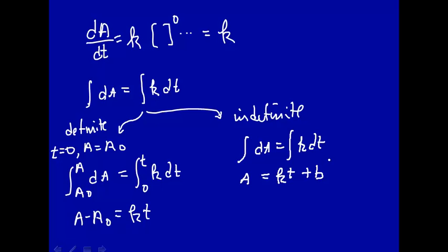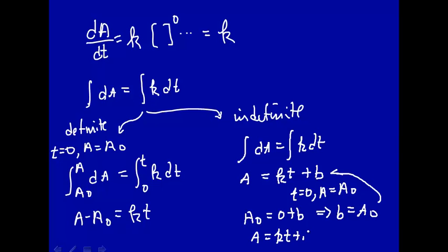Now, to determine what the integration constant b is, well, we use some initial conditions, or we have to know what A is at some particular time. Just let's use that. So at time equals zero, A is equal to A₀. So we put that time equals zero, A is equal to A₀. A₀ is equal to zero plus b. Or the integration constant b is just then A₀. You put that in here. And so you have A is Kt plus A₀.